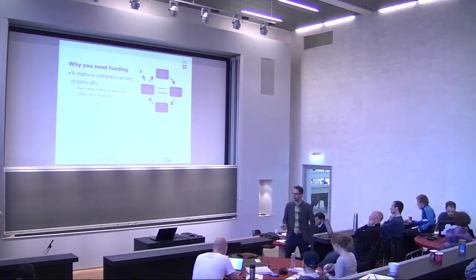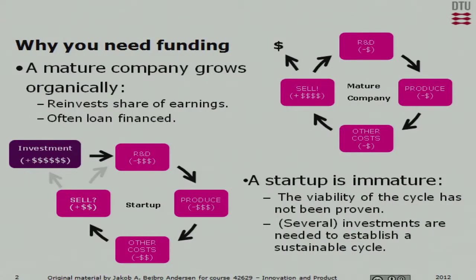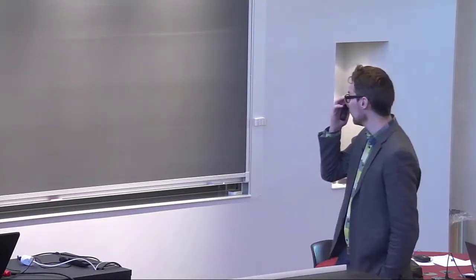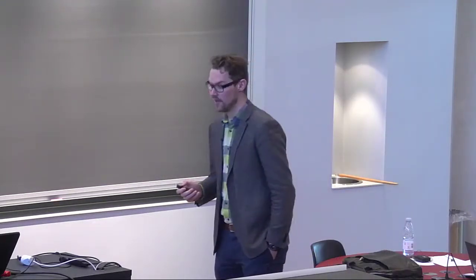The situation is different with a startup. You don't know if you'll be able to sell, you don't know exactly how much it's going to cost to produce, and you don't know what the other costs or even the R&D will cost. Because of all this uncertainty, there's a lot of risk involved. That's where investors come in — the investor essentially forces this cycle through a number of iterations until you reach a stage where you have a healthy company that runs on its own sales and funds.